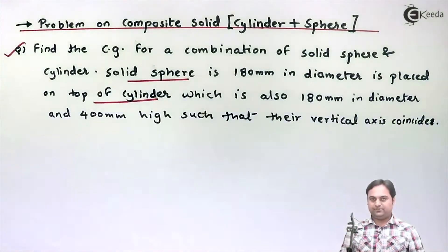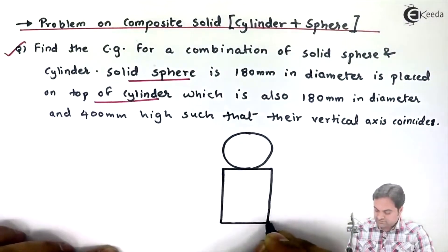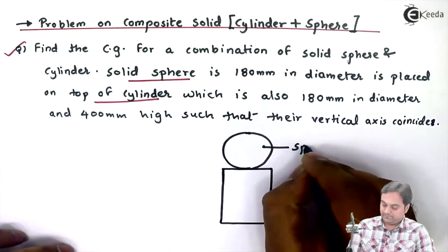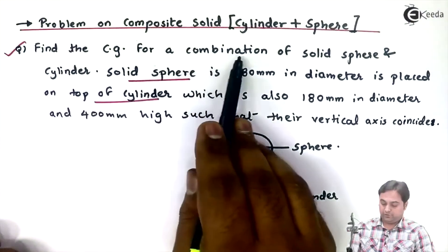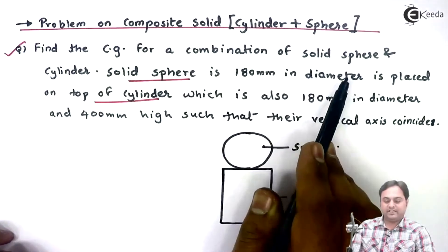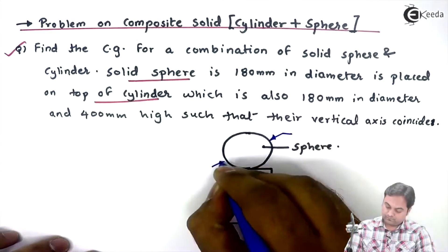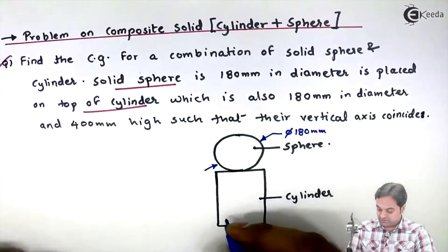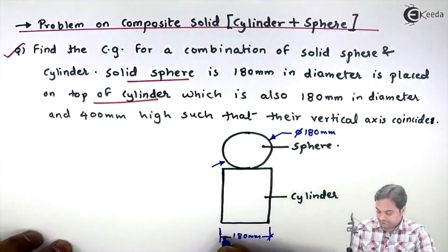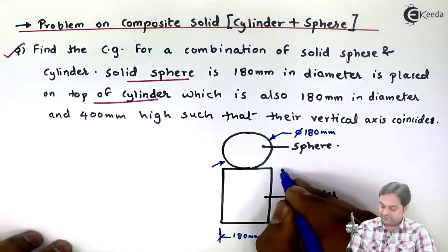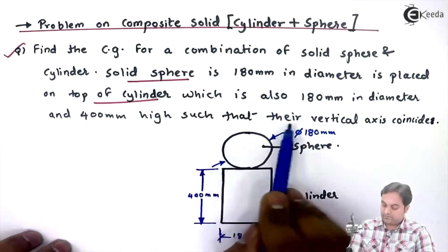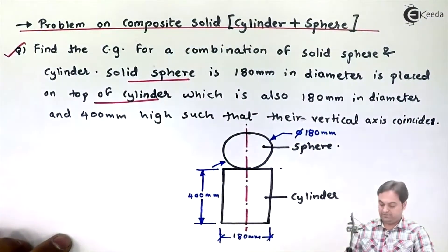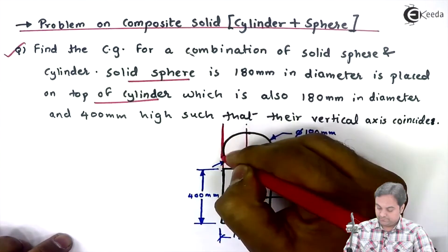Based on the given data, I will draw the diagram. This is the arrangement where we have a cylinder and on top of that we have a sphere. The diameter of the sphere is 180 mm, the diameter of the cylinder is also 180 mm, and the height of the cylinder is 400 mm. Their vertical axes coincide. Now I will place this composite solid on an axis system.